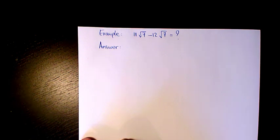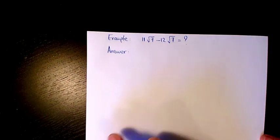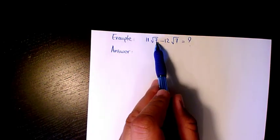What's up guys, this is Massey, welcome to my channel. In this video I want to show you some examples regarding adding and subtracting square roots or adding and subtracting radicals. So the first one is 11 root 7 minus 12 root 7.